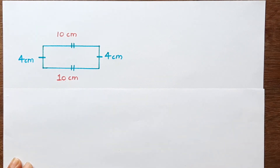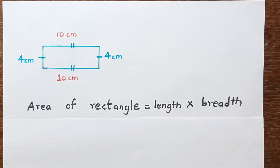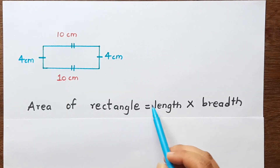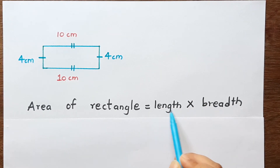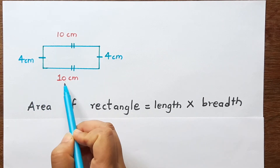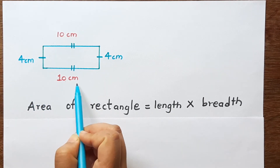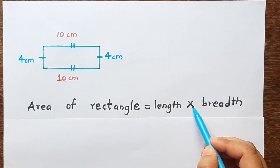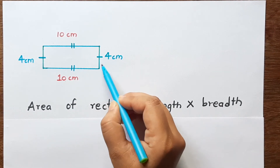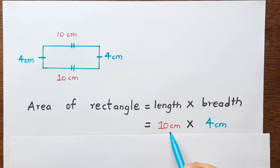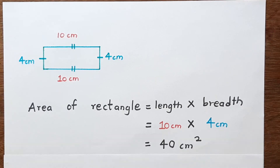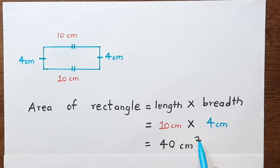What is the formula? The first step is to write the correct formula. Area of rectangle is equal to length into breadth. The answer will be in centimeter square.